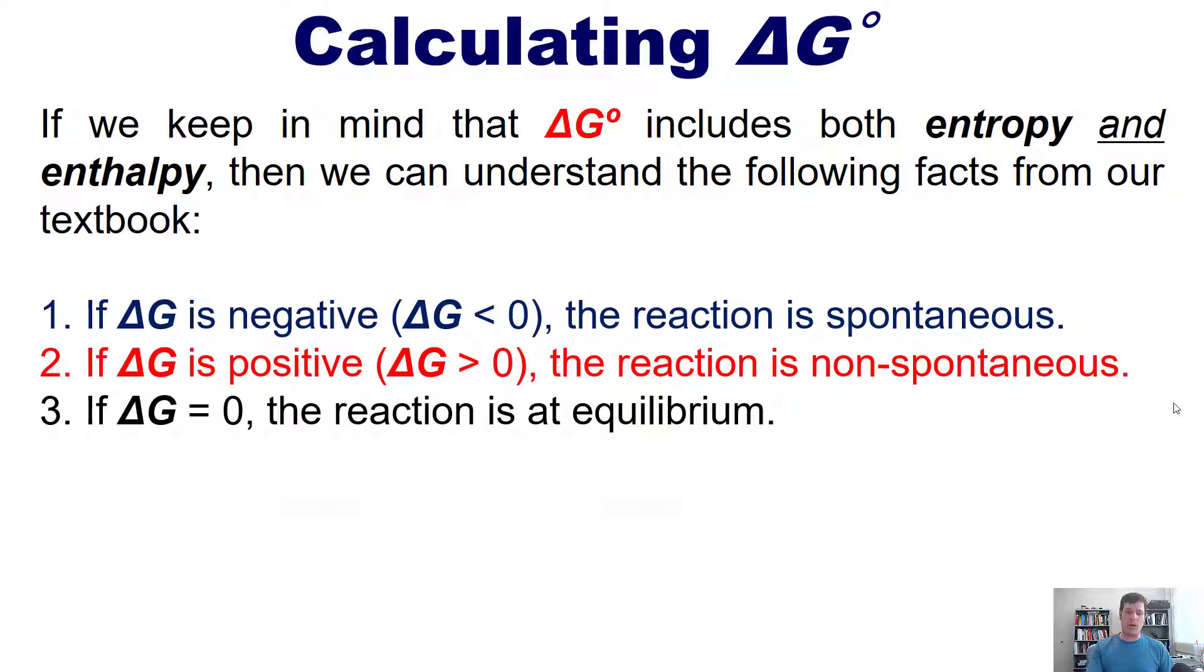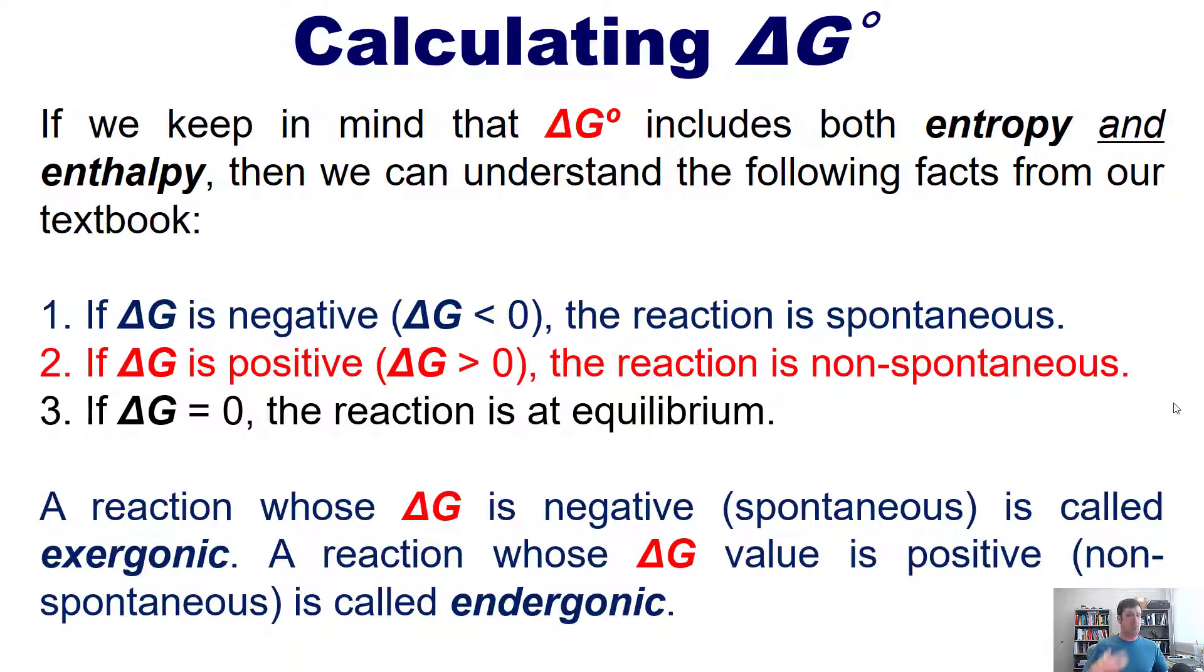Now as it turns out, a reaction whose delta G is negative, a spontaneous reaction, is called exergonic. While a reaction whose delta G value is positive, that is a non-spontaneous process or reaction, is called endergonic.